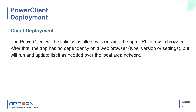PowerClient will be initially installed by accessing the app URL in a web browser. After that, the app has no dependency on the web browser type, version, or settings, but will run and update itself as needed over the local area network.